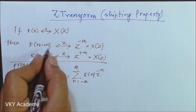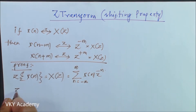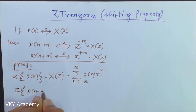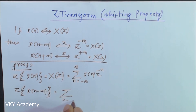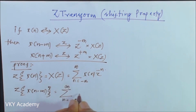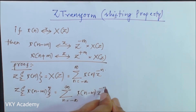Now our new function is x of n minus m. So the Z transform of x of n minus m will be the summation from n equal to minus infinity to infinity of x of n minus m times z to the power minus n.